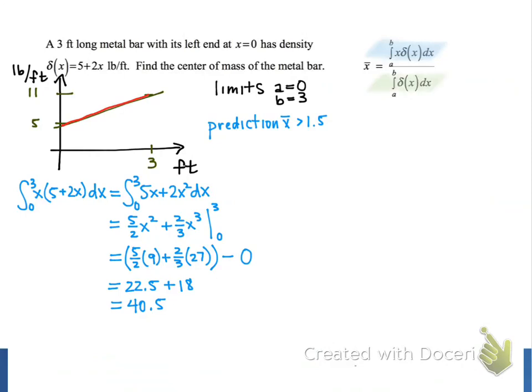Next, we're going to evaluate the integral that's in the denominator of the formula. We have the integral from 0 to 3 of 5 plus 2x dx, so the integrand this time is just our density function, delta x.